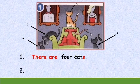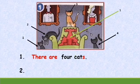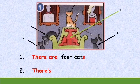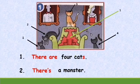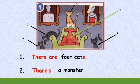Second sentence: can you see the monster? Let's count together — one. Only one monster. Is it singular or plural? Singular nouns, right? So begin your sentence with 'there's'. You can use 'a' or 'one monster': there's a monster. Now let's read together — number one: there are four cats. Number two: there's a monster.